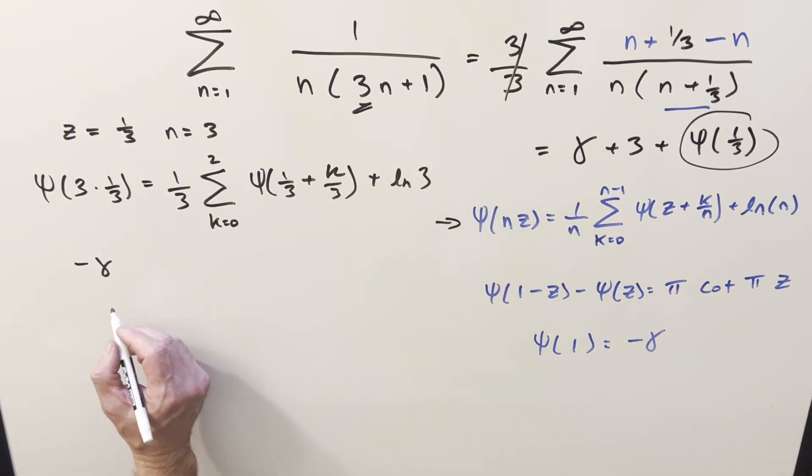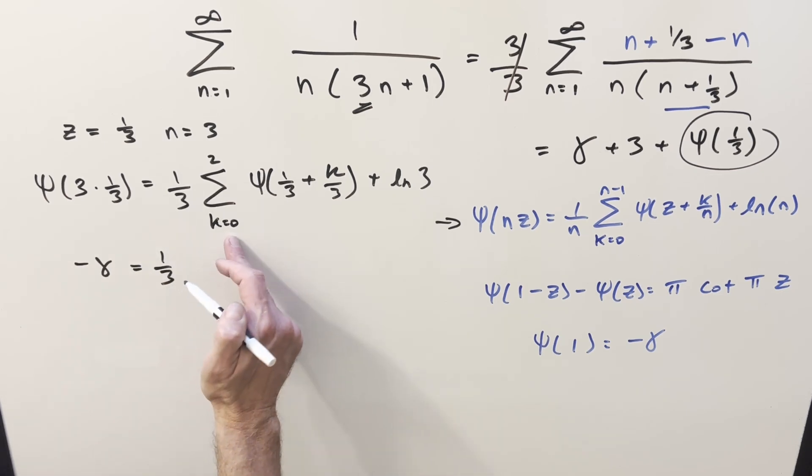So again, on the left, digamma of 1 is going to be minus Euler-Mascheroni constant. Then on the right, let's just break out. This is just going to be three terms here. So it's going to be for the first one, when k is 0, we just have digamma of 1 third, which we want.